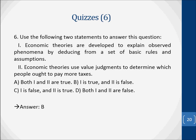Question six: use the following two statements to answer this question. Statement one: economic theories are developed to explain observed phenomena by deducing from a set of basic rules and assumptions. Statement two: economic theories use value judgments to determine which people ought to pay more taxes. Options: A. both one and two are true, B. one is true and two is false, C. one is false and two is true, D. both one and two are false. The correct answer is B — one is true and two is false.